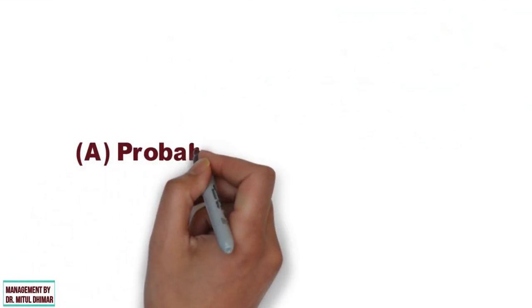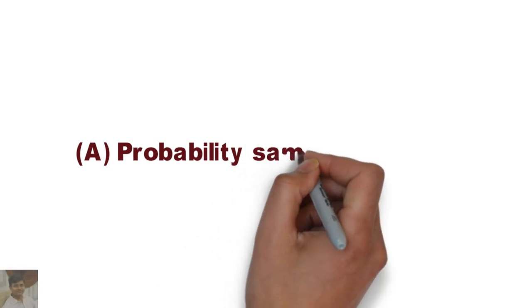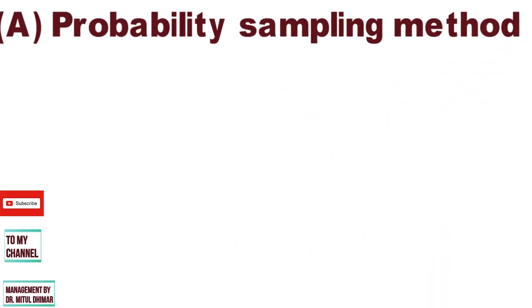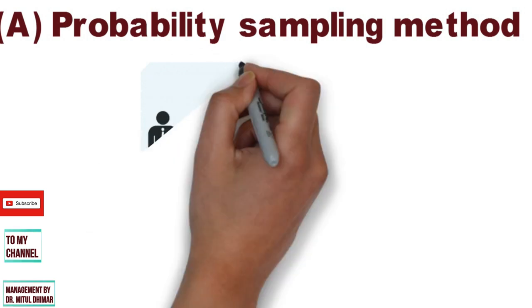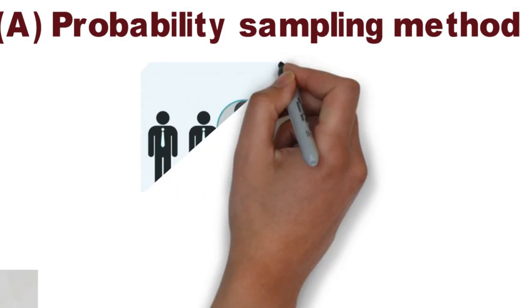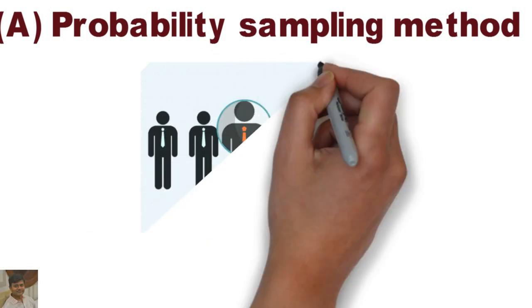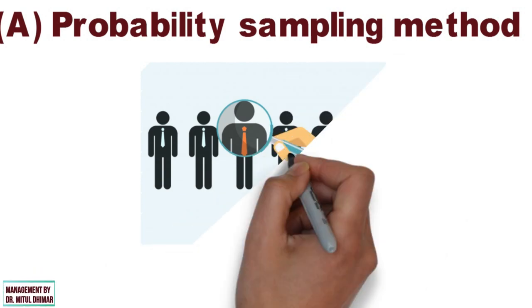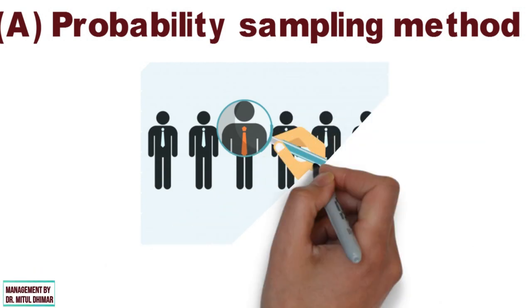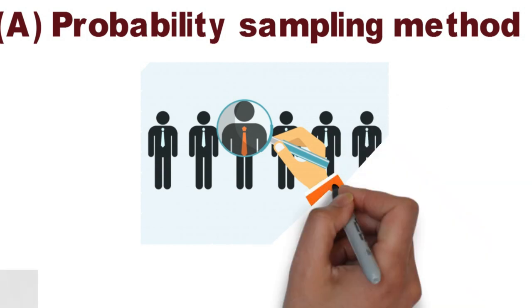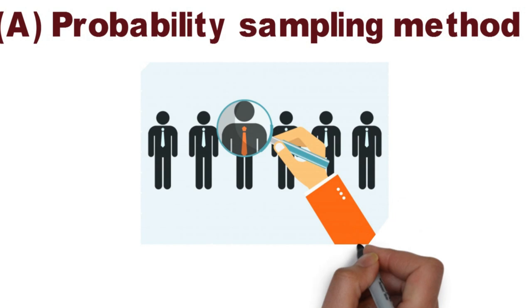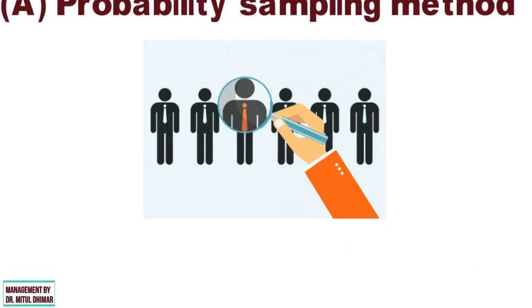Probability sampling is a sampling technique in which samples are collected in a process that offers all individuals in the population an equal chance of being selected. In these sampling techniques, the researcher must ensure that every individual has the same selection opportunity. Let us study types of probability sampling in detail.